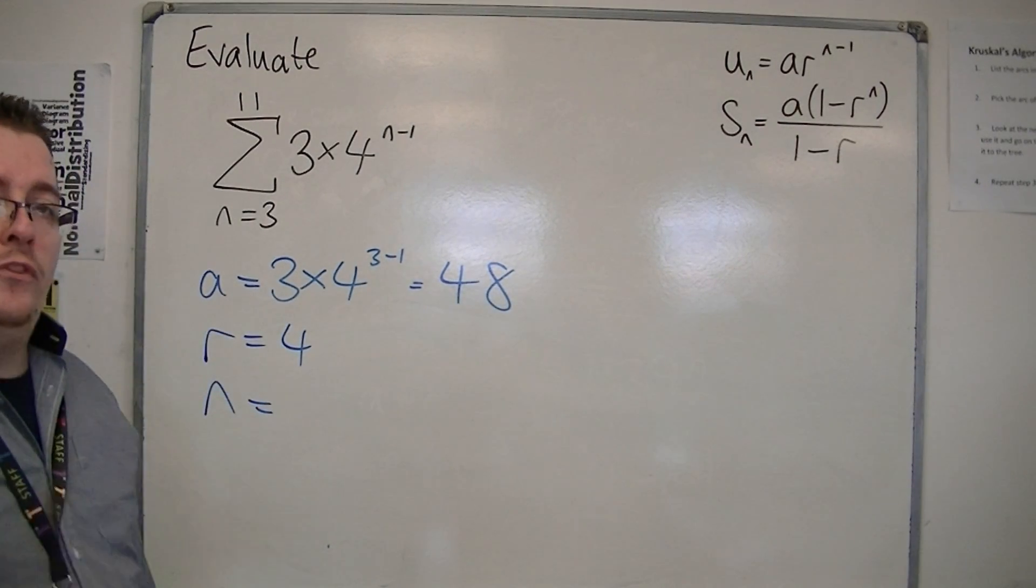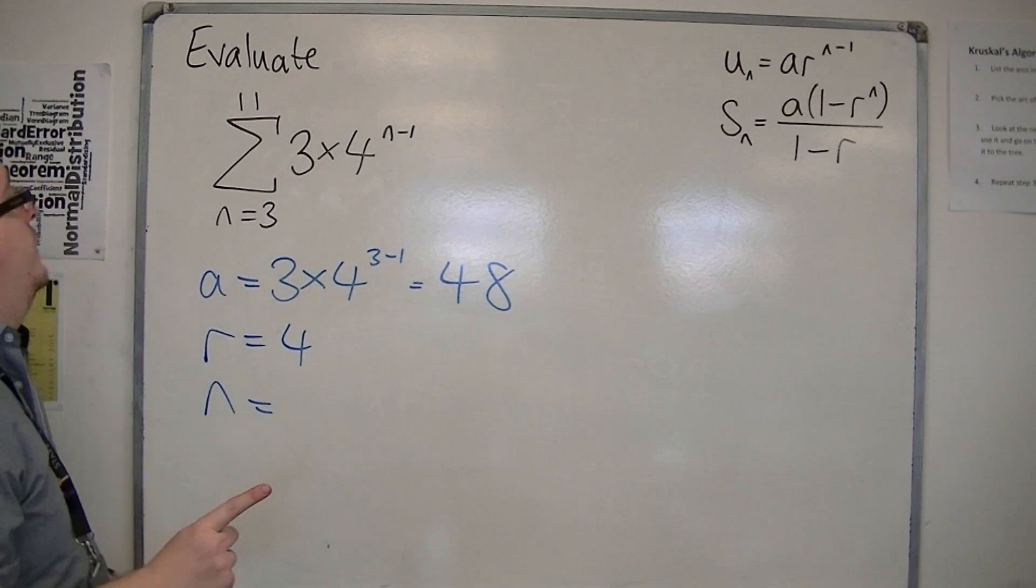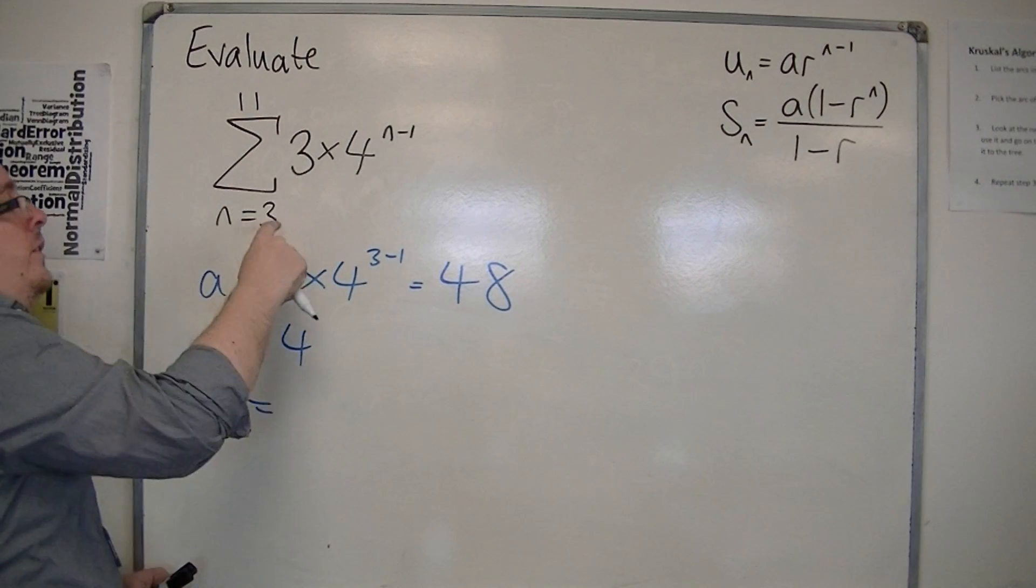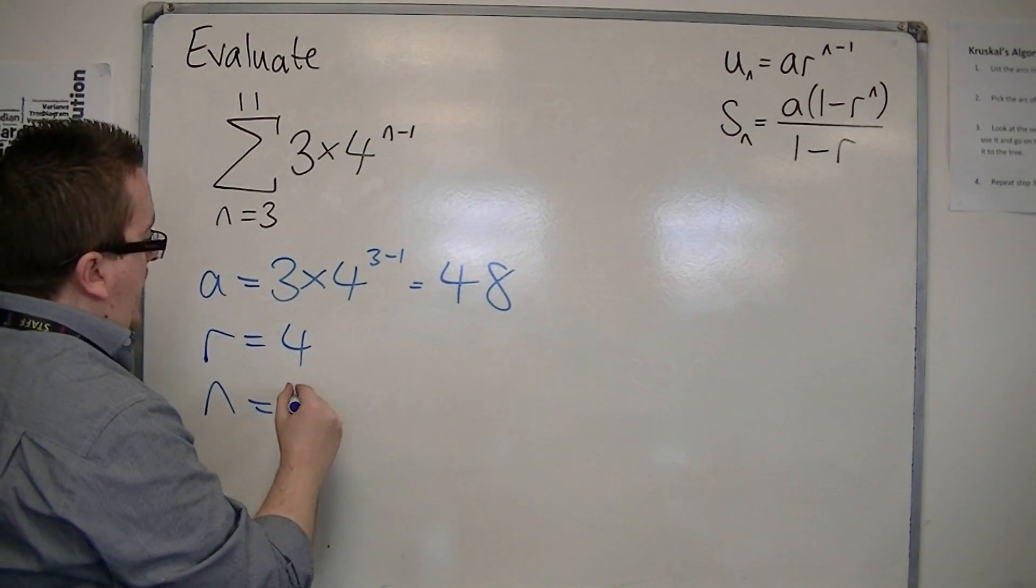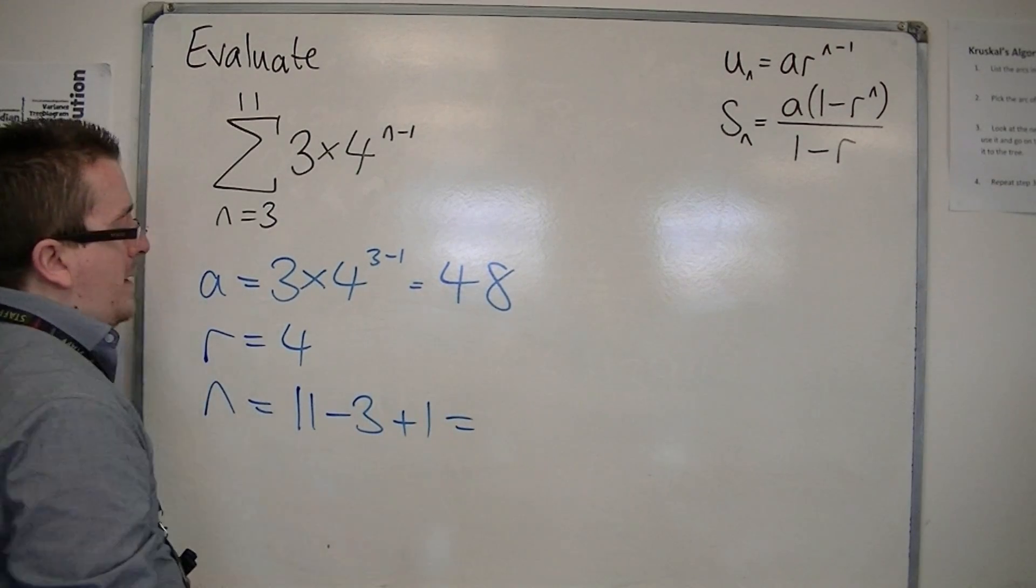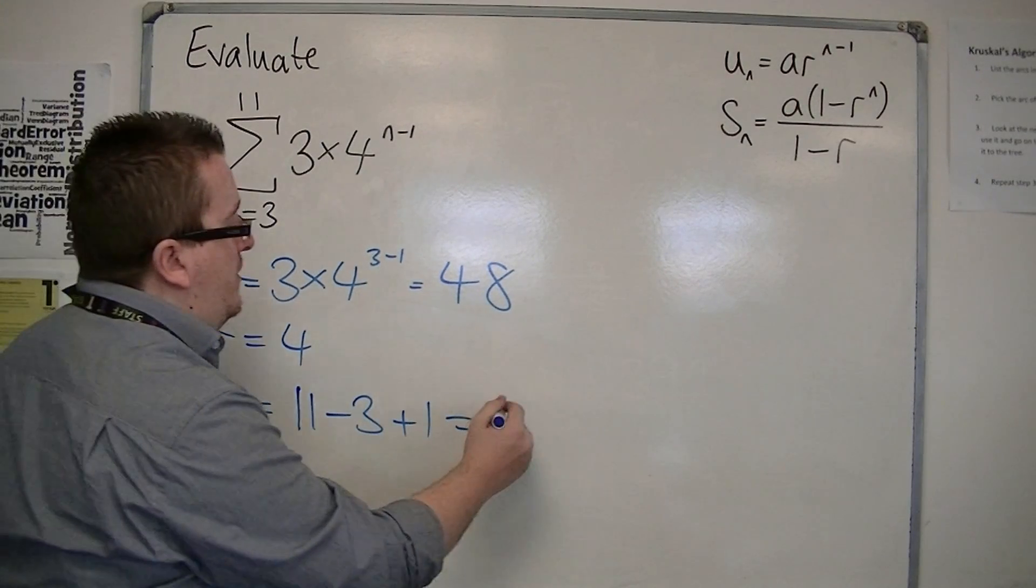n is the number of terms in the series, in the sequence. So remember, you take the top term, take away the bottom term, and then add one. Eleven take away three plus one. Always plusing one on the end. So there's nine terms.